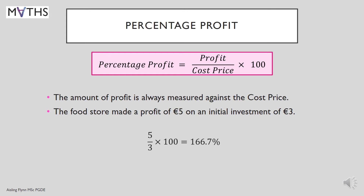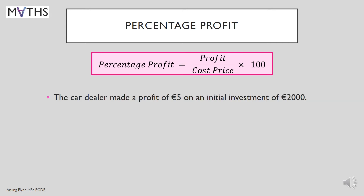Let's compare that now to the car dealer. The car dealer made a profit of €5 on an initial investment of €2,000. So the cost price is €2,000 — 5 on 2,000, or 5 out of 2,000, creating the fraction. Multiply the fraction by 100. On your calculator, you can do 5 divided by 2,000 multiplied by 100. That only resulted in a less than 1% profit, or a quarter of a percent — 0.25%. Much less in comparison. So that's why we use percentage profit.